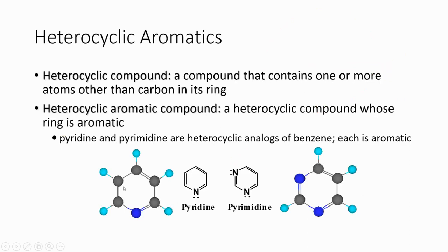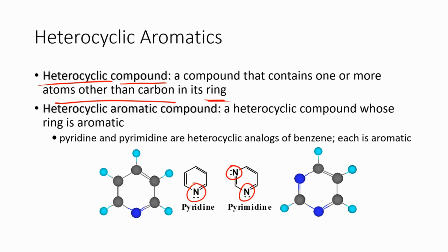But so do a lot of other compounds. For example, there are many heterocyclic aromatic compounds. Heterocyclic ones are those that have atoms other than carbon in the ring. For example, pyridine has a nitrogen, and pyrimidine has two of them in the ring. This would be substituting an atom other than carbon — a hetero atom — for a point in the ring.